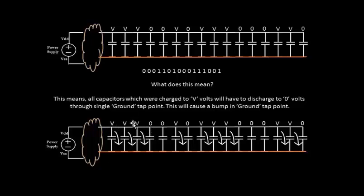By trying to discharge, they are trying to throw away all of their charges onto this particular ground. So many capacitances are throwing their charges onto the ground - you will see a bump.